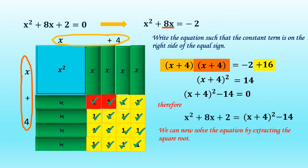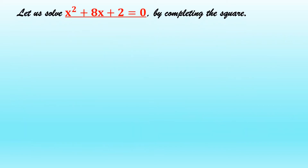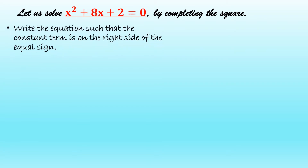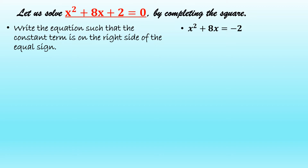We can now solve the equation by extracting the square root. Let us solve x squared plus 8x plus 2 equal to 0 by completing the square without using the algebra tiles. We'll use the following steps. Step 1: write the equation such that the constant term is on the right side of the equal sign. Our equation would become x squared plus 8x equal to negative 2.